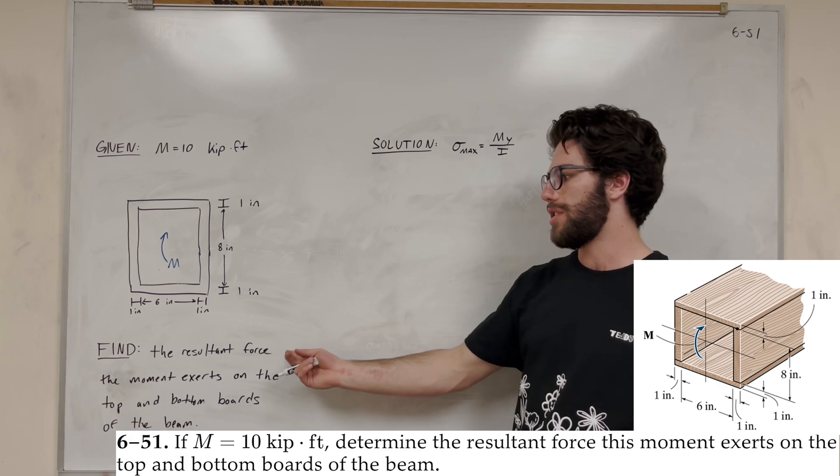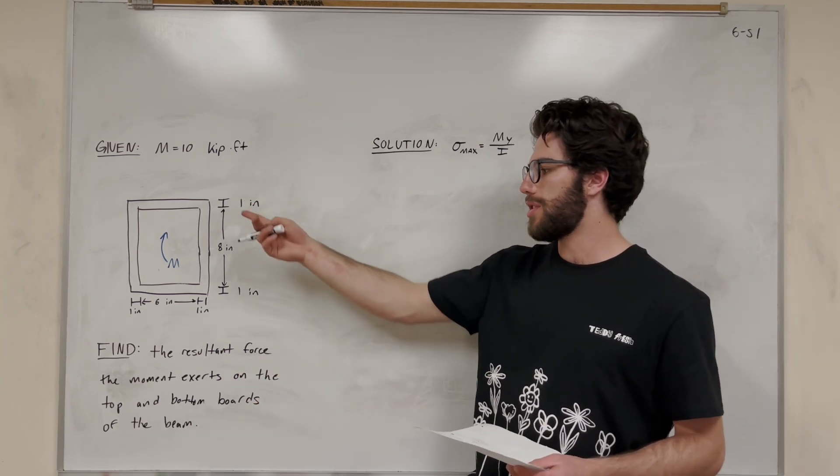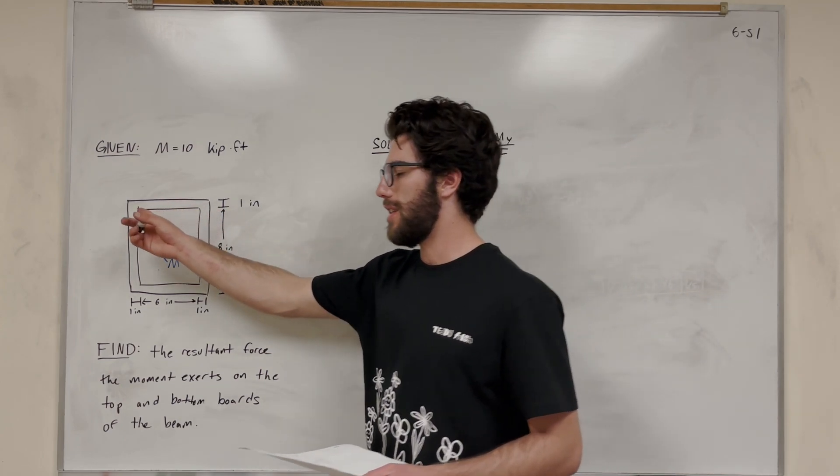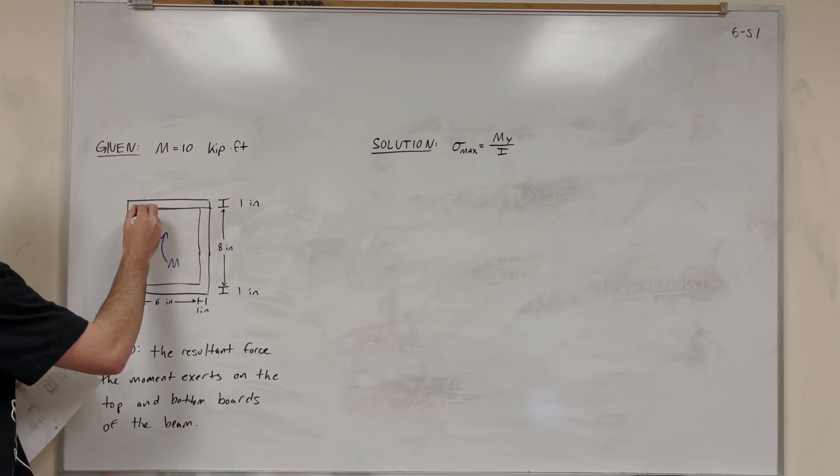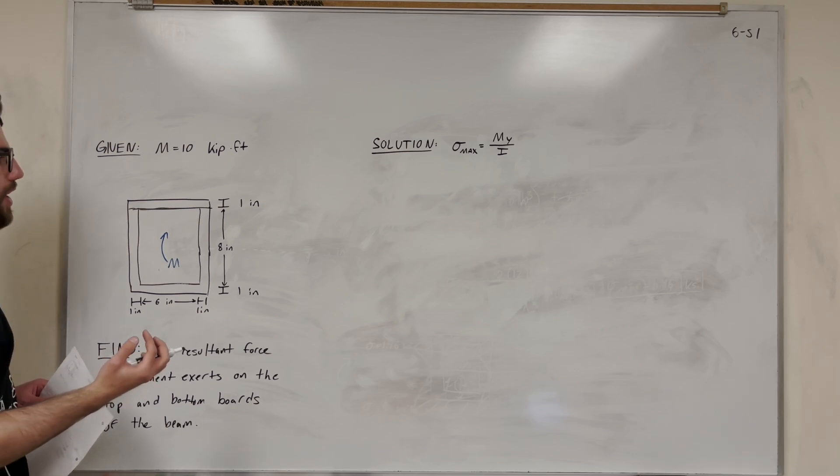Our goal is to find the resultant force the moment exerts. The moment is exerting a force on the top and the bottom of this beam. You can see that the beam is divided like this. We're going to find the force that is getting inserted onto this beam here. So let's go ahead and solve for that.